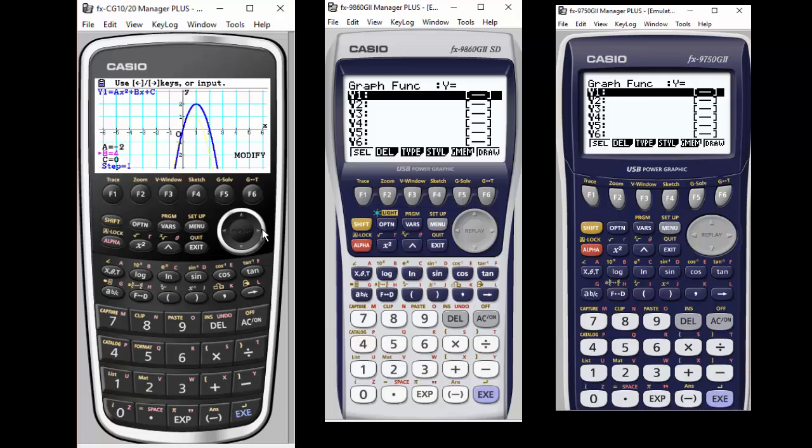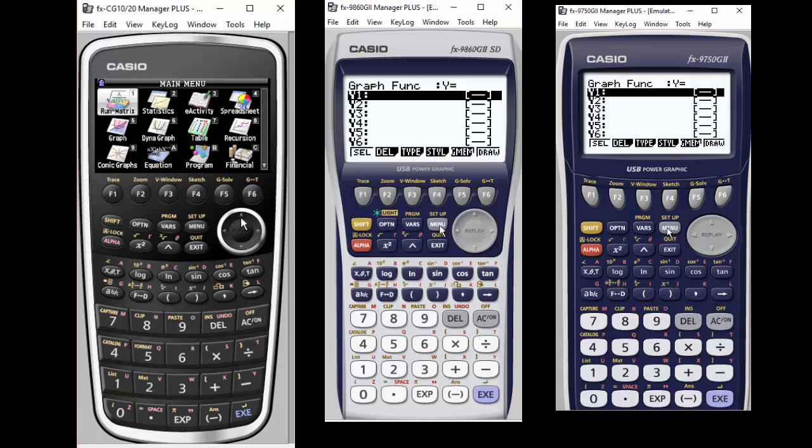If this is important to you, the Prism might be the one to go with. Obviously, things you need to think about are: do you want color? What size screen do you want? Do you want more memory? You would go with the Prism in those cases. But functionality-wise, for the most part, they all perform the same.